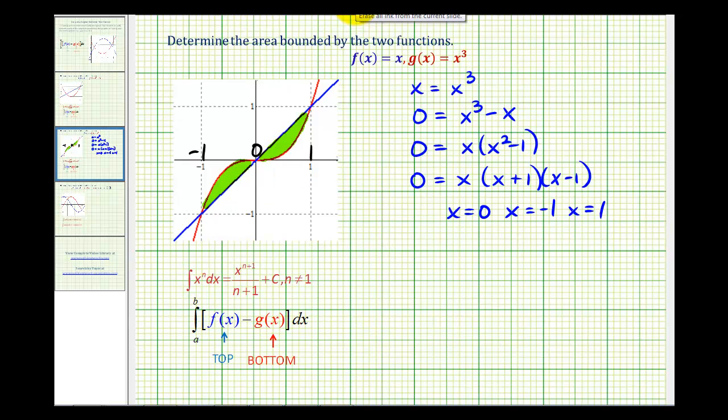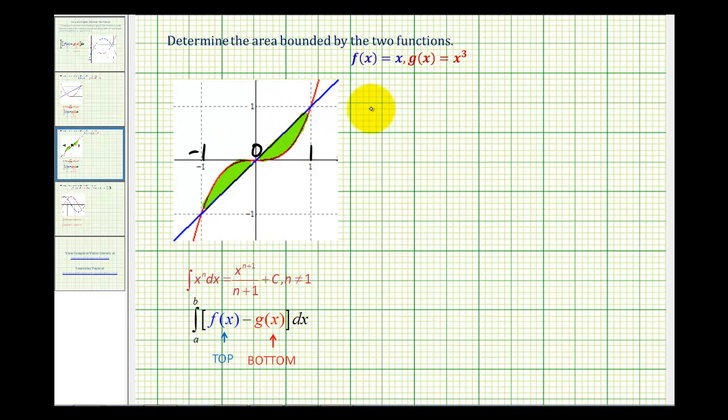Let's go ahead and set up our two definite integrals. Other than determining the x-coordinates of the points of intersections, when we set up an integral we have to have the top function minus the bottom function. So the area of the entire bounded region will be the definite integral from negative one to zero of x cubed minus x.